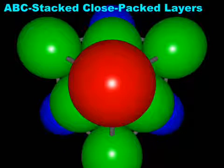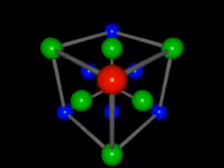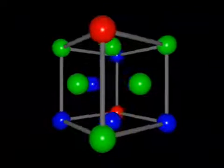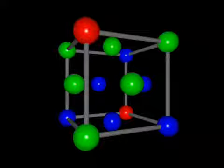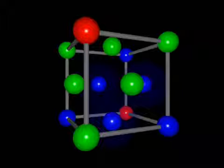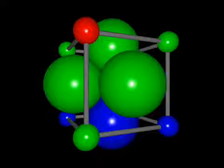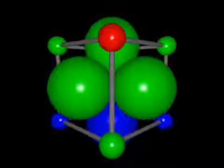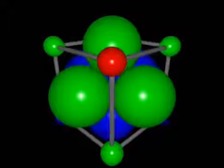Here we use color to represent the three close-packed layers in the face-centered cubic lattice. Two types of spaces, or holes, exist between the layers of close-packed structures. The first type of hole is called an octahedral hole and is formed between three atoms in one close-packed layer and three atoms in a second close-packed layer immediately above or below the first. The space at the center of a face-centered cubic is actually an octahedral hole, formed by three atoms in the green close-packed layer and three atoms in the blue close-packed layer.